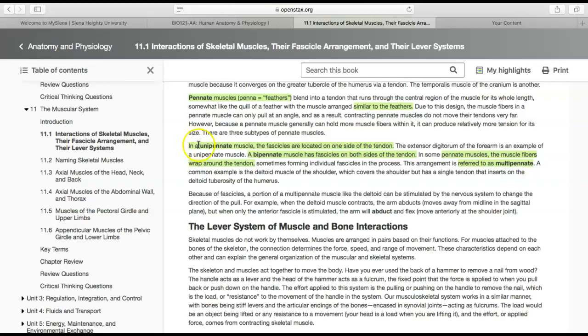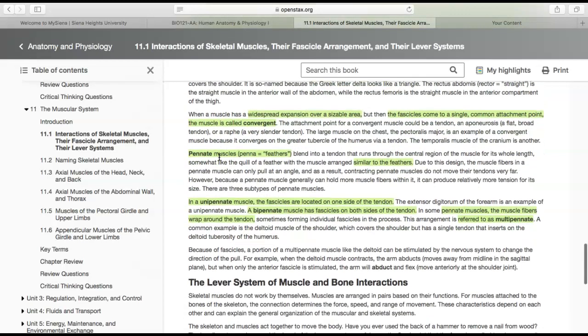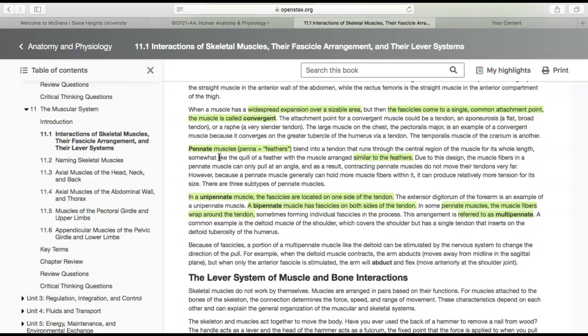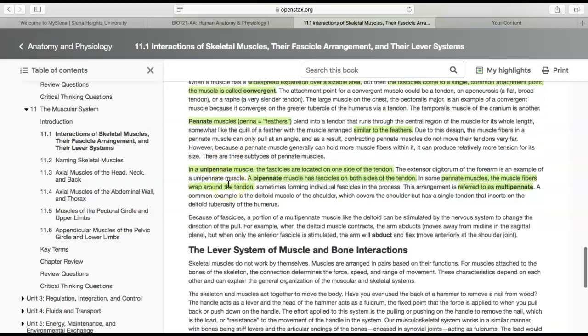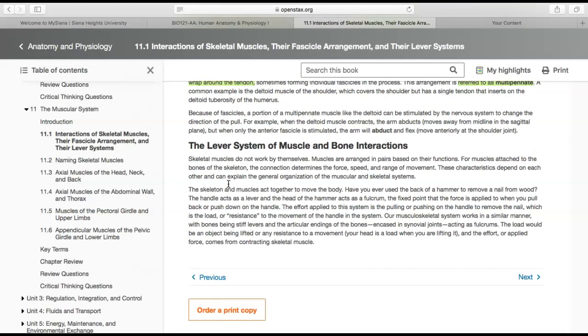That's basically naming muscles for what they look like. You'll get more into that once you start looking at Visible Body, and hopefully these terms will make more sense. The last thing I want to talk about is the lever system of muscle and bone interactions.